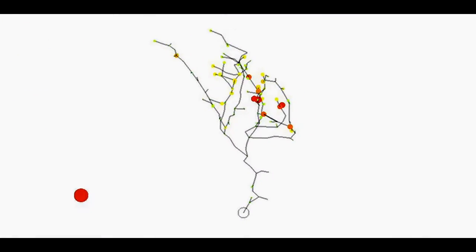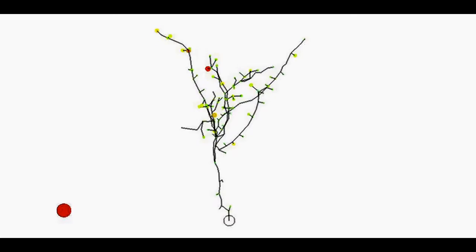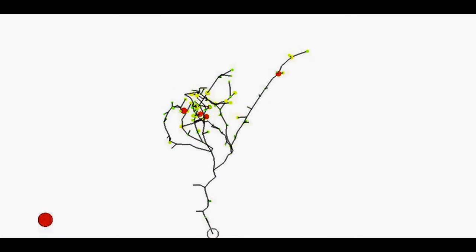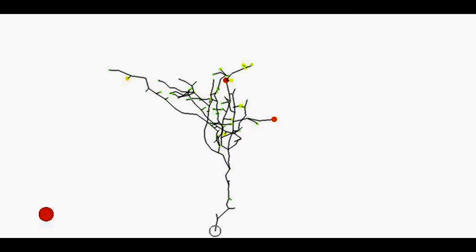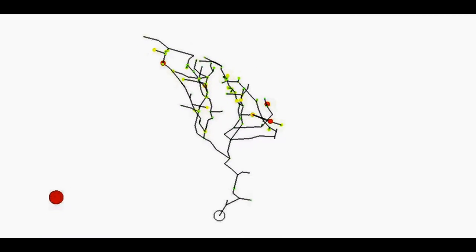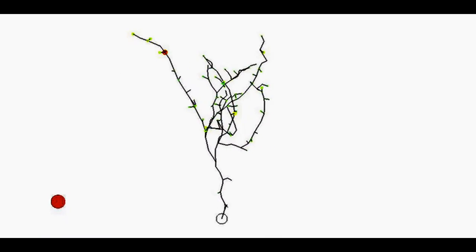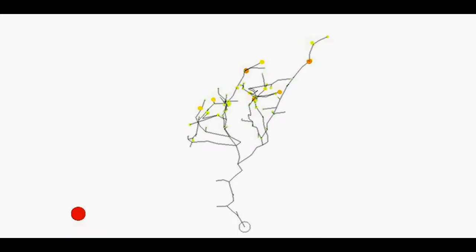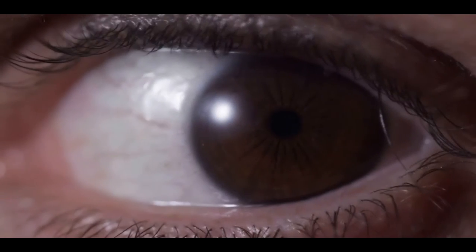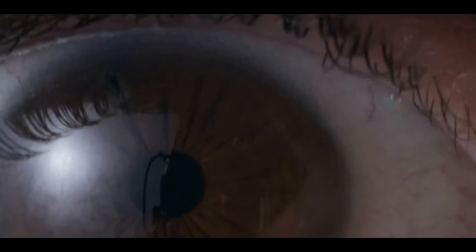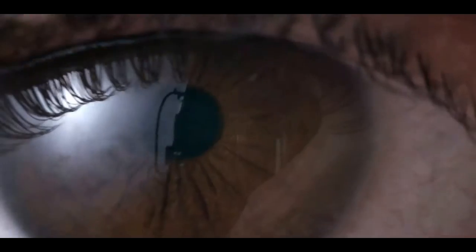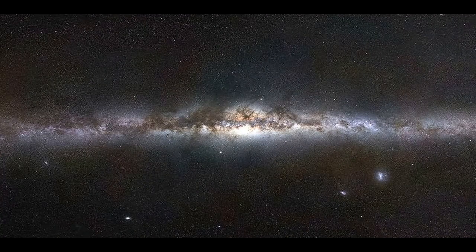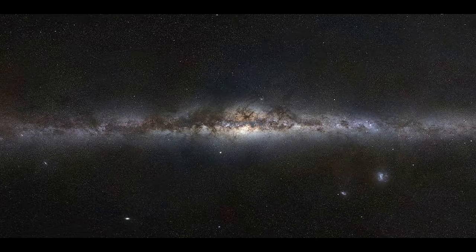Perhaps the most impressive feature of the brain is the amount of connections formed between neurons. There are an estimated 86 billion neurons in the brain, each of which forms an average of 7,000 connections with other neurons, resulting in between 100 and 500 trillion synapses within the brain. The number of neurons in the human brain has been equated to the number of stars in the Milky Way.